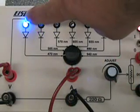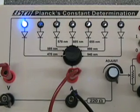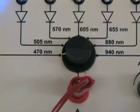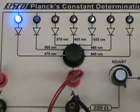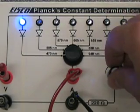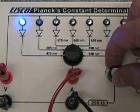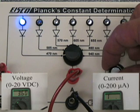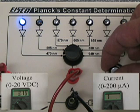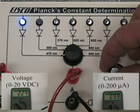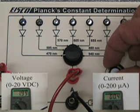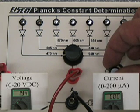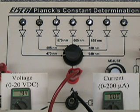For trial one of this experiment, we select the blue LED, which according to the manufacturer emits photons of a wavelength of 470 nanometers. We adjust the voltage across this LED using the variable resistor, and as we decrease that voltage, the LED gets dimmer. We watch the ammeter and make a note when the ammeter's current first goes to zero. The voltage on the voltmeter is 1.94 volts.